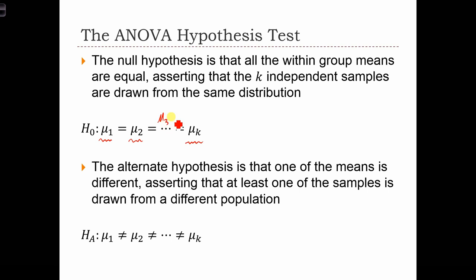So in here, we've got μ₃ equals μ₄ equals everything up to the number of groups that we have. So in that drug use example, we only had three groups. So the null hypothesis would be μ₁ equals μ₂ equals μ₃.